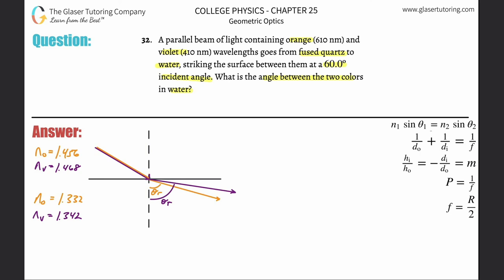They told us the angle here is 60 degrees. Let's calculate this - it doesn't matter which one we choose, so let's do the purple first. We use Snell's Law: the index of refraction for the incident ray multiplied by the sine of that angle of incidence equals the index of refraction for the refracted ray multiplied by the sine of the refracted angle.